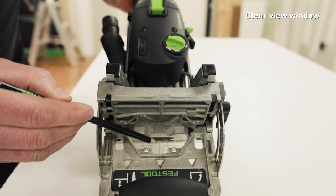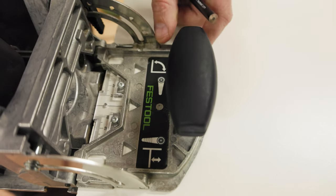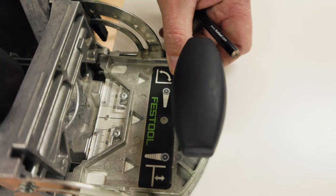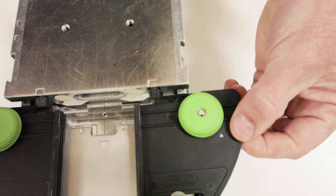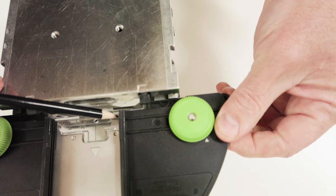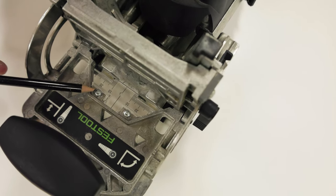The Clearview window has a centre position indicator to assist cut alignment when referencing off marks. The window also has measurements on it to assist when aligning the trim stop accessory for width. The window is also adjustable if centre of cut requires realignment.